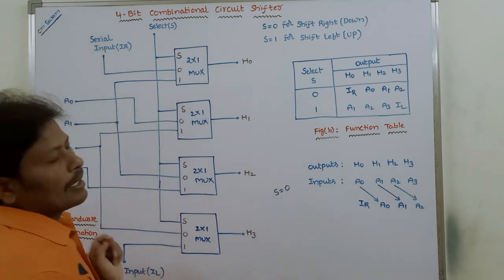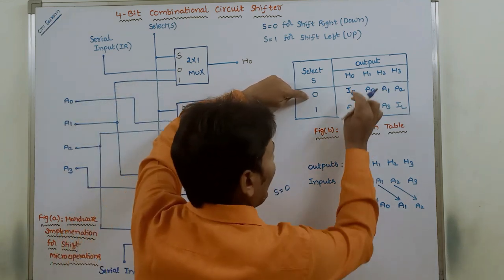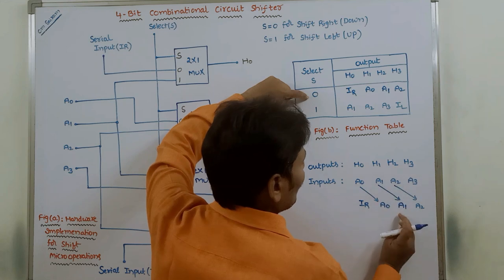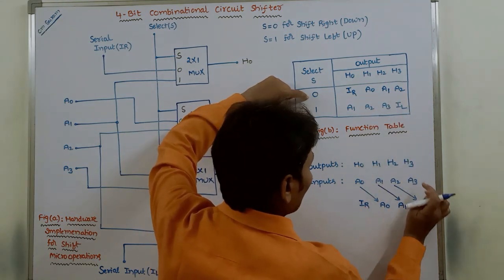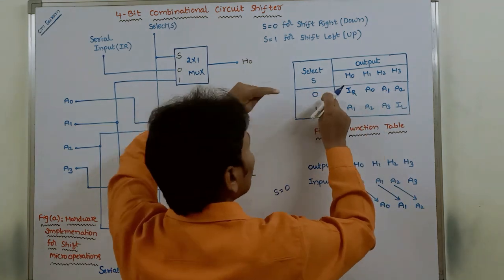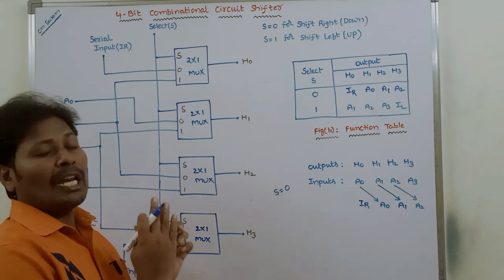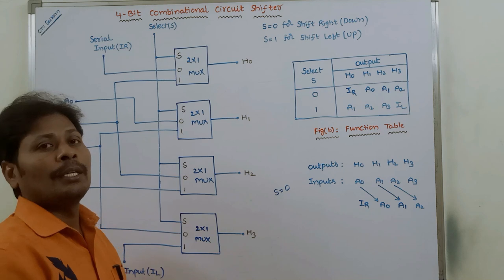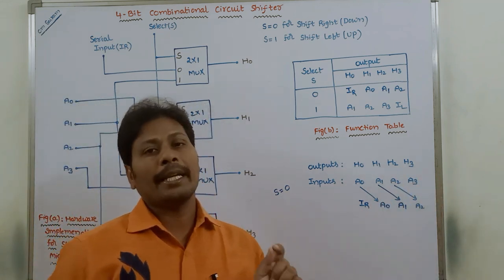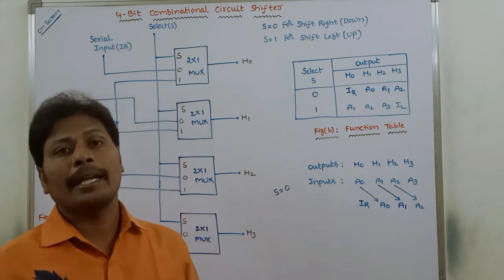This shift right behavior occurs when S is equal to 0. In the function table, when S is equal to 0, we write IR at H0, A0 at H1, A1 at H2, and A2 at H3. So when S equals 0, we perform the shift right operation: input data bits shift towards right, the LSB bit A3 is discarded, and the vacant place is filled with serial input IR.